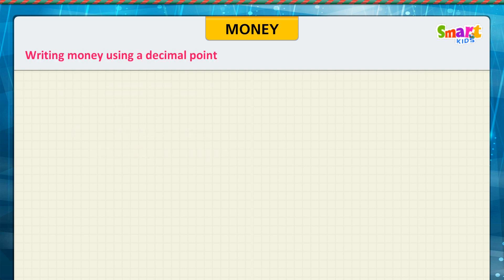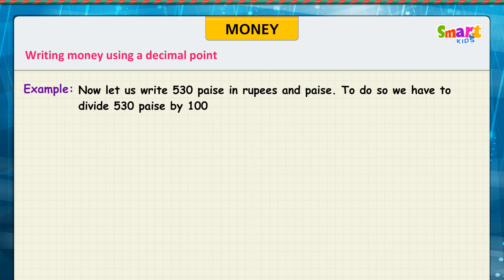Writing money using a decimal point. Now let us write 530 paise in rupees and paise. To do so, we have to divide 530 paise by 100. 530 divided by 100.